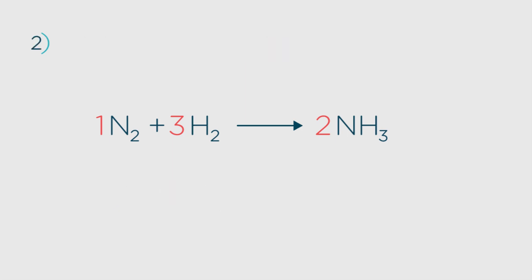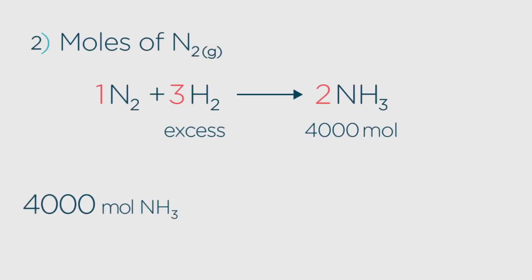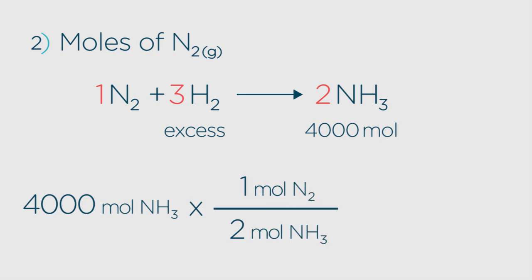Can you work out how many moles of nitrogen gas were used to make the 4,000 moles of ammonia? Pause again and resume when you have the answer. Well, you simply have to divide the 4,000 by the molar ratio, which is 2, so the answer is 2,000 moles of nitrogen. Did you get that one?